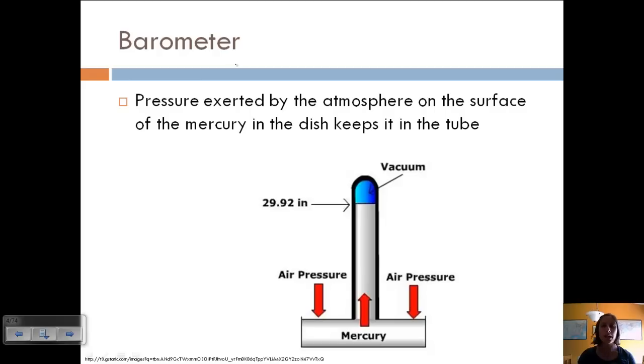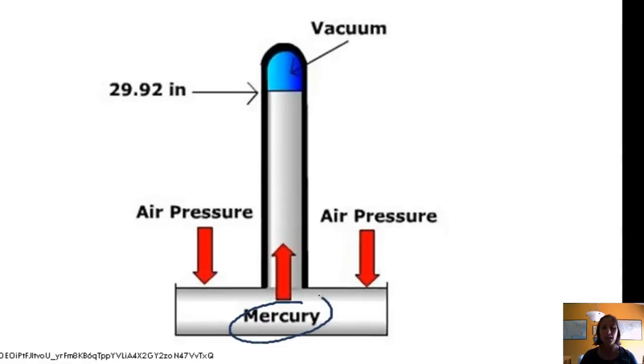So let's take a look at a barometer. Pressure is exerted by the atmosphere on this mercury. Now, considering mercury is probably not very good for you, I'm sure there are probably other things that we can use besides mercury, but it exerts pressure down on the mercury. The only place it has to go is up this tube, and so the mercury rises until it has equalized with the pressure, and then we can measure the height of the mercury, and that gives us a reading of pressure.